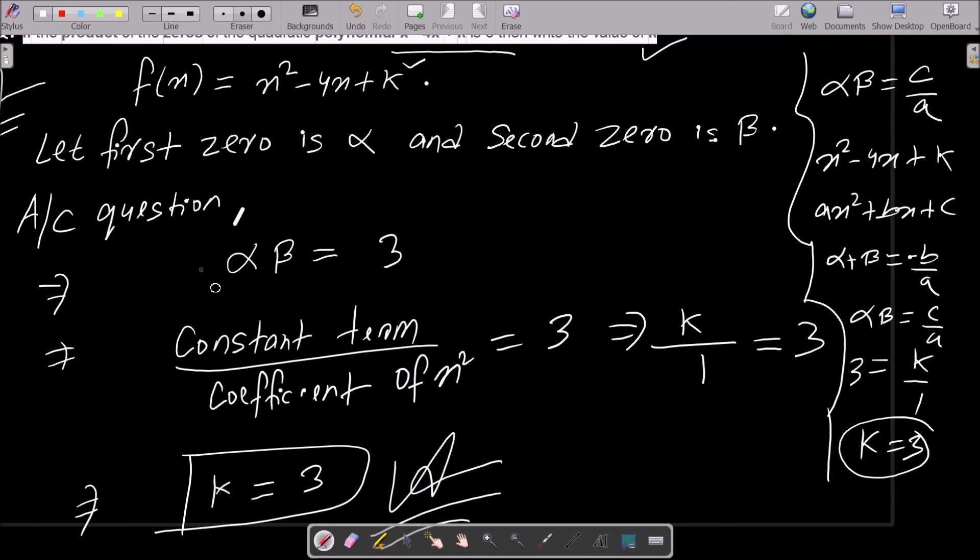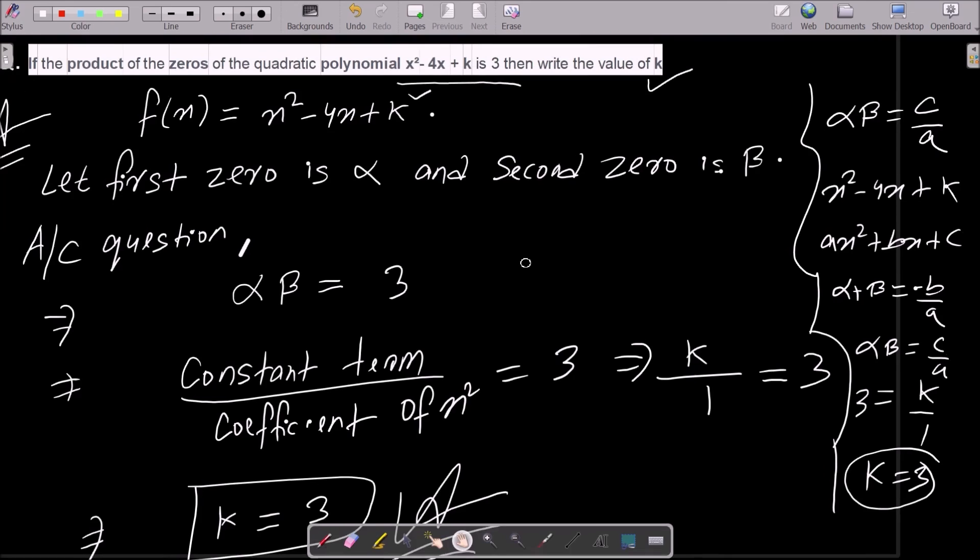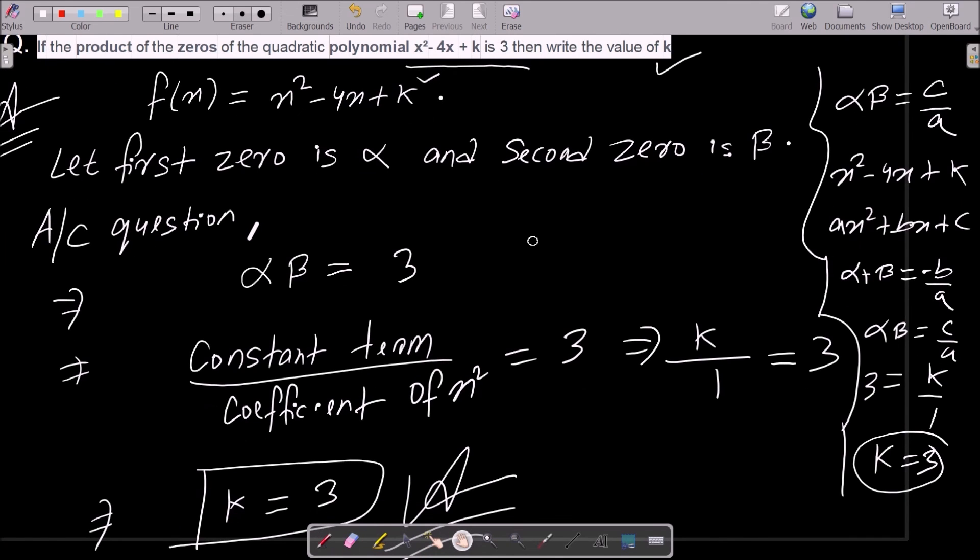You can solve it either way and get the same answer and same marks. You just need to remember this formula: α × β equals constant term divided by coefficient of x².